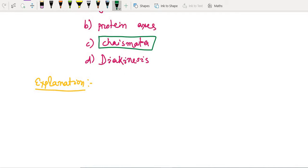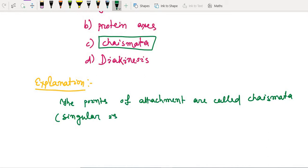Here is the explanation. The points of attachment are called chiasmata. Singular is chiasma. In these spots or in chiasmata crossing over, I am writing in short form CO, crossing over is random.